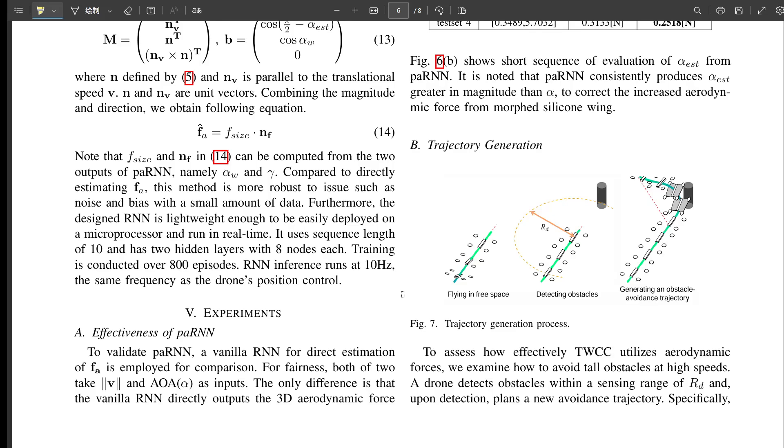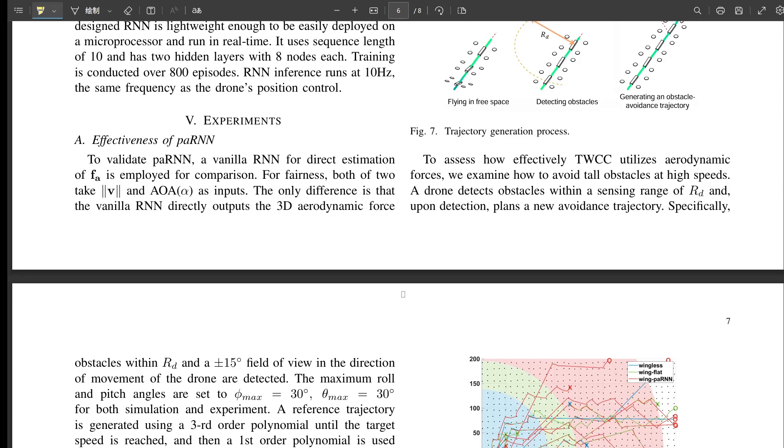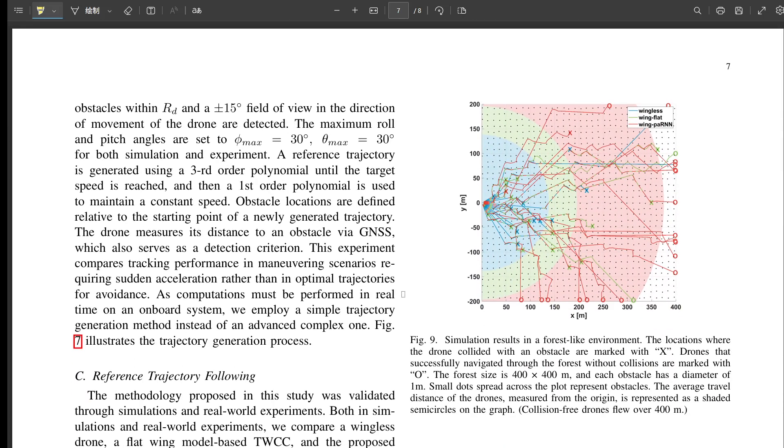And the results. Consistently, the drone with the peron-N-based TWCC did much better than a wingless drone, and also better than a version using a simpler, non-learning model for the wings. It just tracked the desired paths much more accurately in simulation. Did they test it in more complex scenarios, too, like with obstacles? They did. They created a simulated forest environment, lots of randomly placed obstacles. Again, the peron-N-TWCC drone had a much higher success rate navigating through it without crashing.